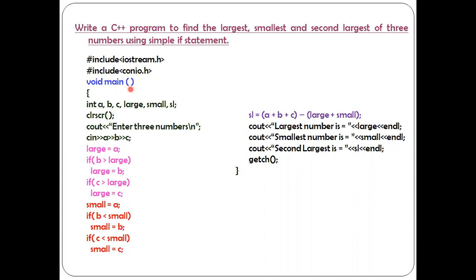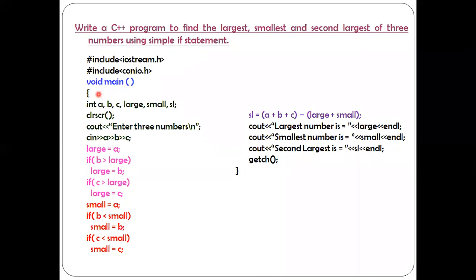Then comes the void main function. Void main means the beginning of your C++ program. Every C and C++ programming language will have one default function called the void main function. Using the term void means this main function does not return any value. If you use only main without void, then the main function should return a value. Then comes the open flower bracket, meaning the begin of your C++ program.